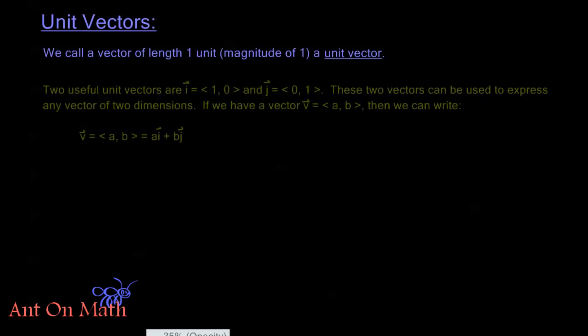Now we have two very special unit vectors which we call I and J. I is the unit vector going in the positive horizontal direction, so it's the vector <1,0>, and J is the unit vector going in the positive vertical direction, <0,1>. These two vectors can be used to express any vector of two dimensions as a sum of I and J.